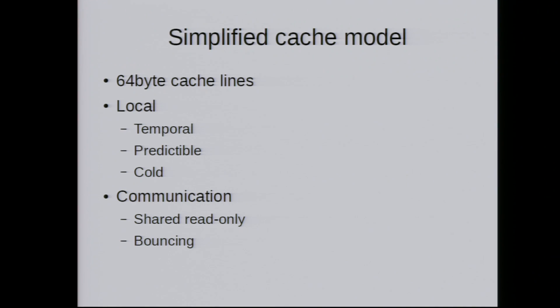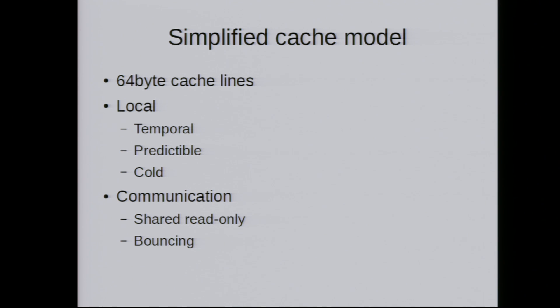For the simplified cache model: think of memory as an array of 64-byte cache lines, each of which can be in different states. On a high level there are two main cases. The first is local: not shared by somebody else. Within that, it can be temporal — recently used, fits in your cache, hot and fast. Or it can be predictable — not recently used, but with a predictable access pattern so the hardware can prefetch it. The third case is cold — has to be read from memory, random access, pretty slow. The second main case is communication.